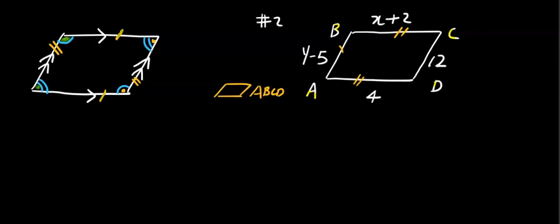This time, BC is X plus 2, AD is 4. Can we find the value of X? By the property, we can set up like this. Therefore, X is 2. Done.